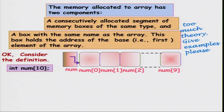So it contains the address of num[0]. These num[0] through num[9] are located somewhere in memory — maybe at memory location 1000. So num contains the number 1000, which indicates that the address of the first location in the array is 1000, or that num points to the memory location 1000.